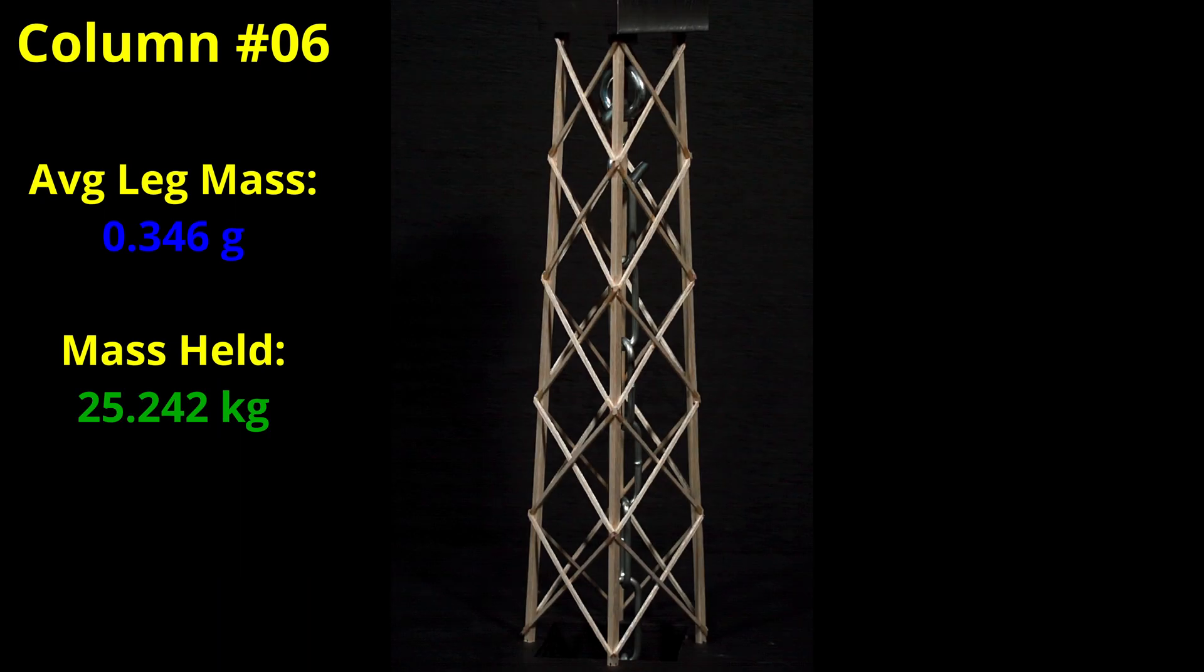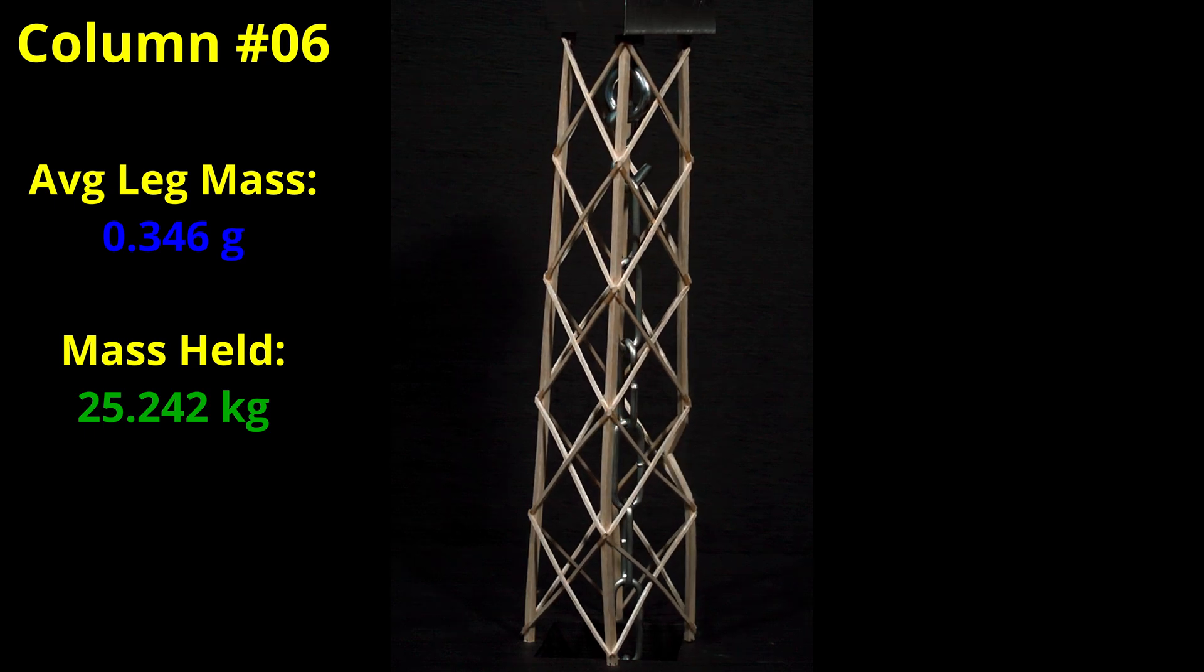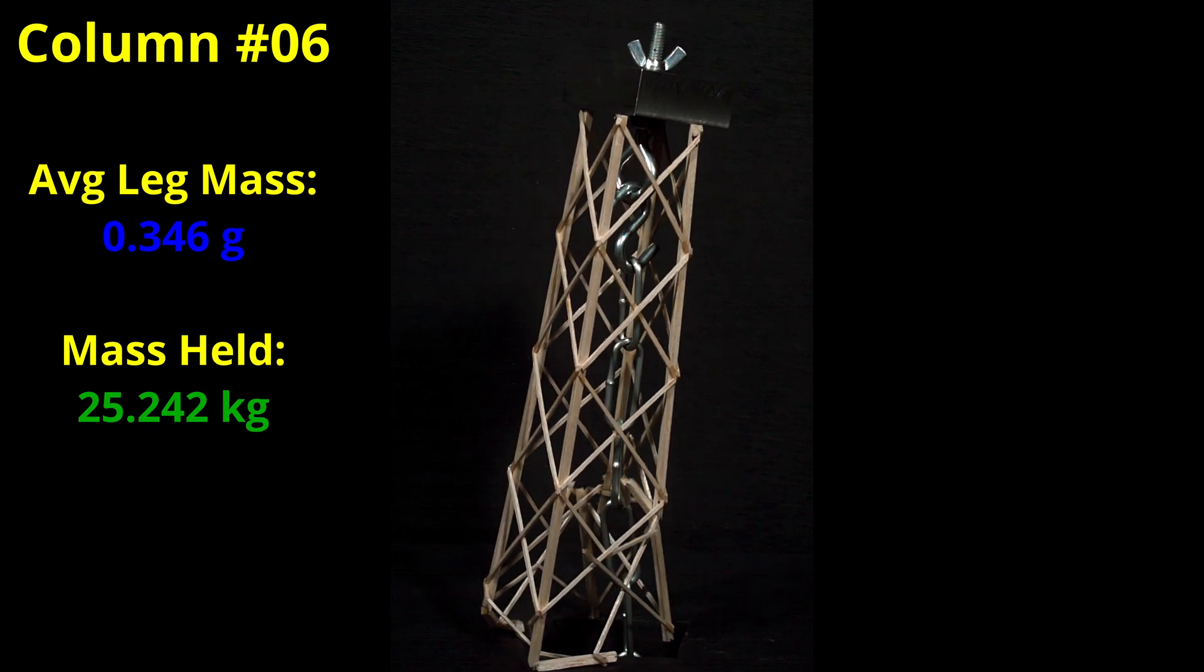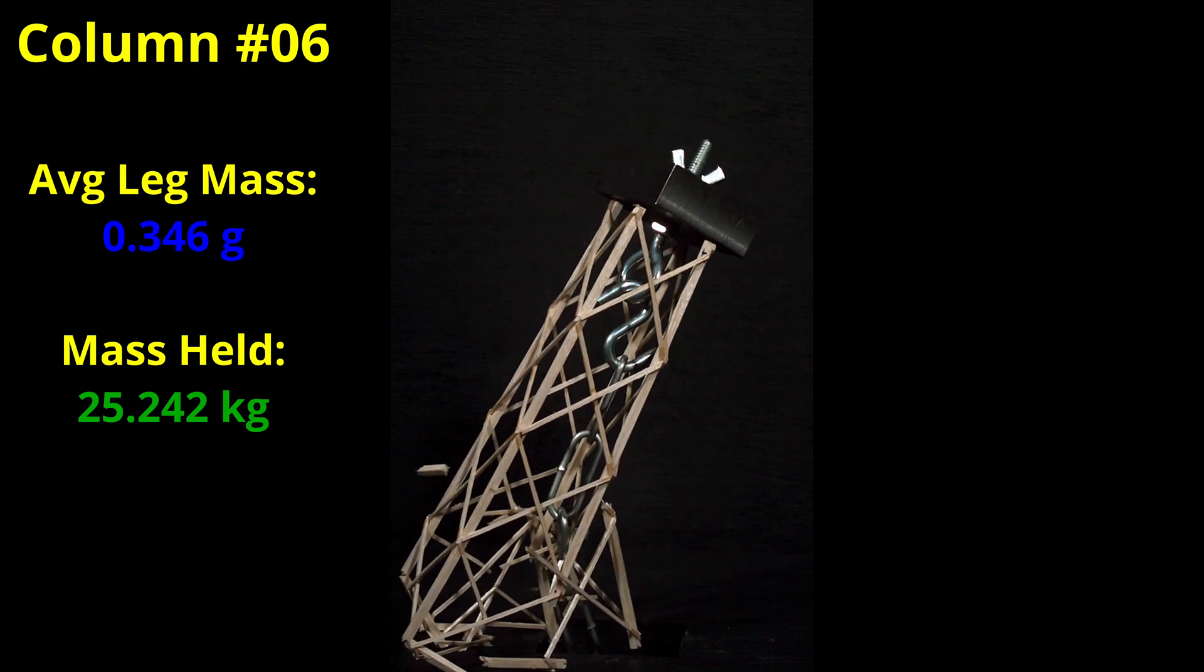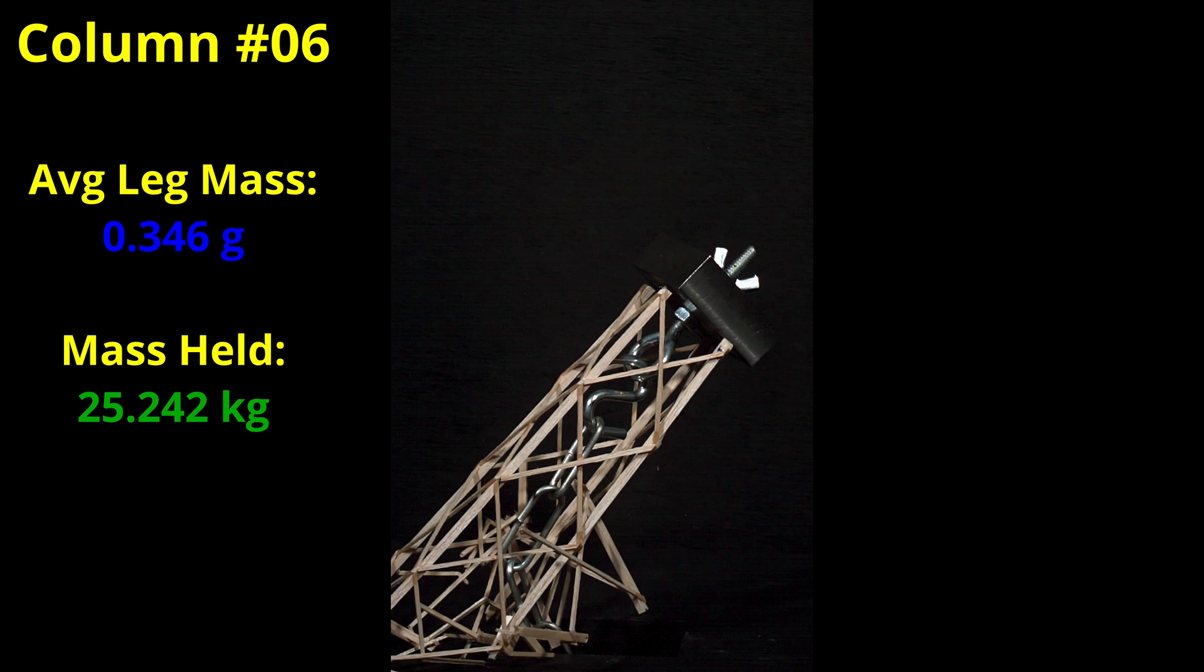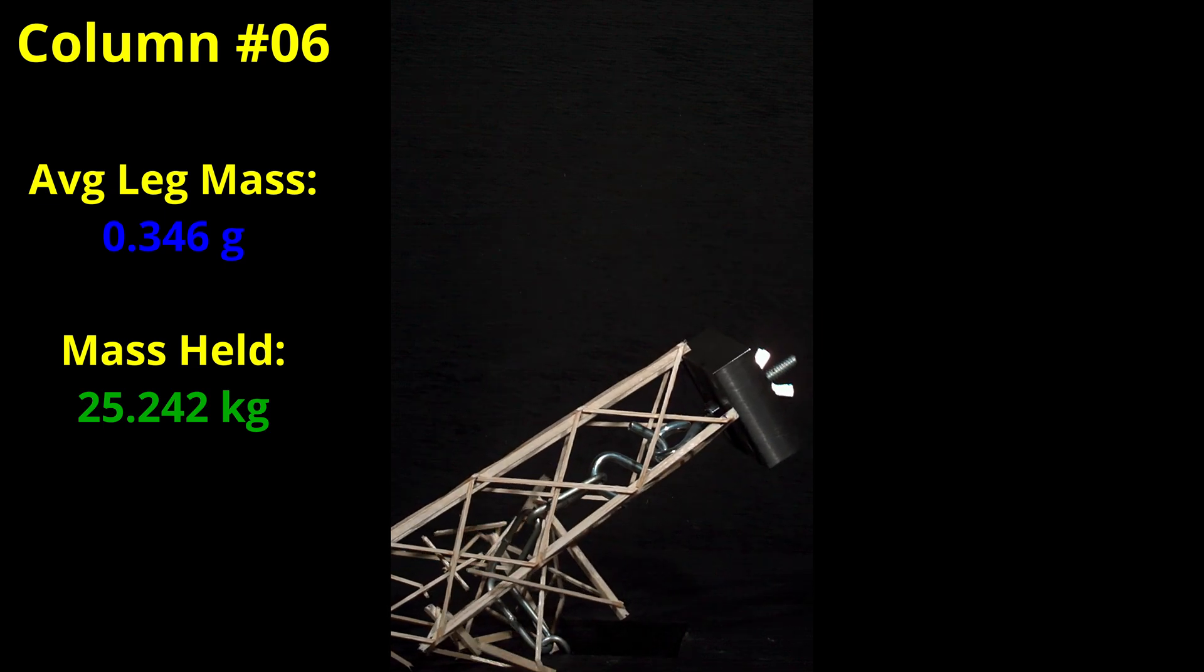This is the final column I tested of my initial 8 builds and you'll see why. While the high speed footage doesn't look that different from the others, our cross members are still holding up well and we have a nice leg failure, I wound up having to test this one twice by adding extra steel weights to the bucket as it held a whopping 25.242 kilograms. The average leg mass was 0.346 grams or only about 12% more than the previous column but it held almost 50% more mass.